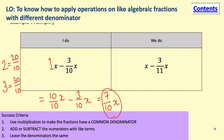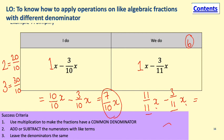For the sixth we-do: one lot of x represents 11 over 11 x, subtract 3 over 11 x. Denominators are the same, variables are the same, so apply the operation to the numerator: 11 take 3 gives 8 over 11 x. As we move on to the practice examples, remember to use your success criteria and the examples in your notes to support you and solidify this skill.